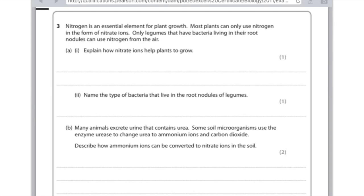Nitrogen is an essential element for plant growth. Most plants can only use nitrogen in the form of nitrate ions. Only legumes that have bacteria living in their root nodules can use nitrogen from the air. A, explain how nitrate ions help plants to grow. Well, it's because you use nitrates to make amino acids in the plant. Name the type of bacteria that live in the root nodules of legumes. Those are nitrogen-fixing bacteria.